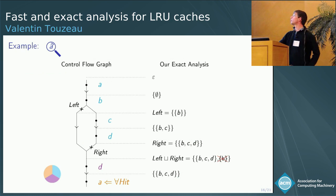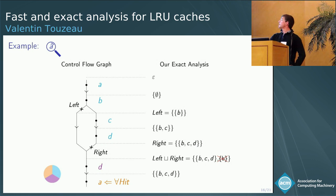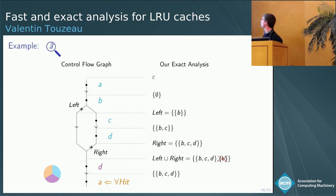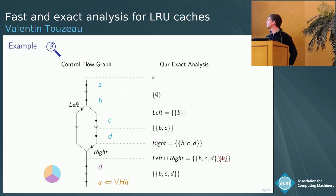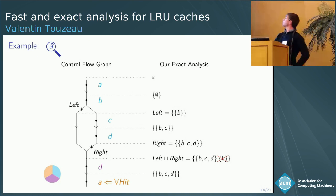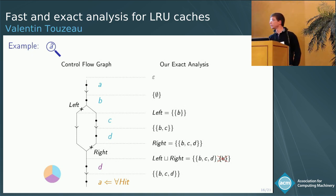Here is how we perform on our previous example. The abstract values are the same except after joining, where we have two possible younger sets: {B} and {B, C, D}. Because B is subsumed by {B, C, D}, we can discard it and reach the same conclusion that the last access to A is always a hit. The improvement may not seem impressive on such a simple example, but it can in practice lead to an exponential speedup and dramatically reduce the size of abstract values.